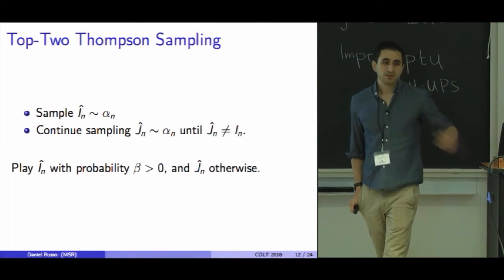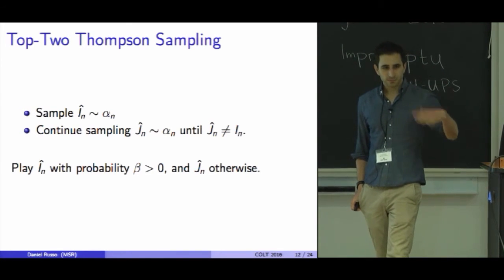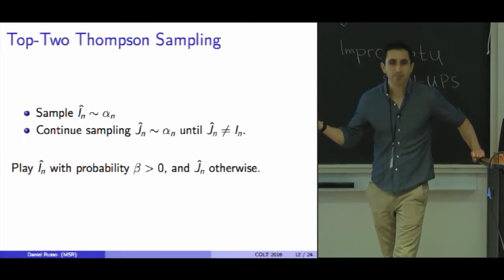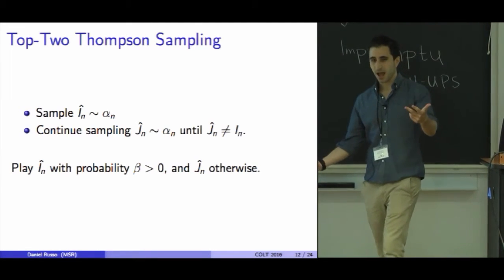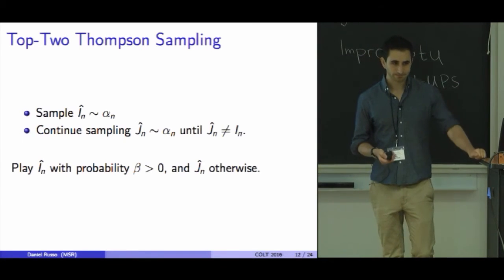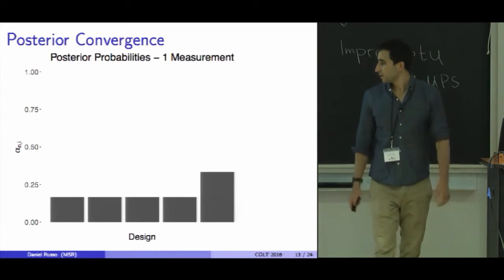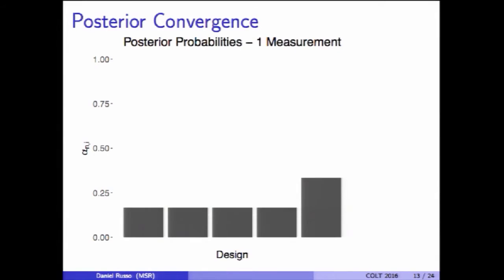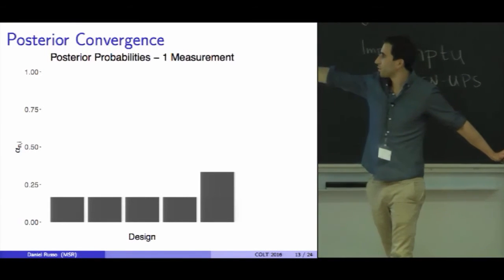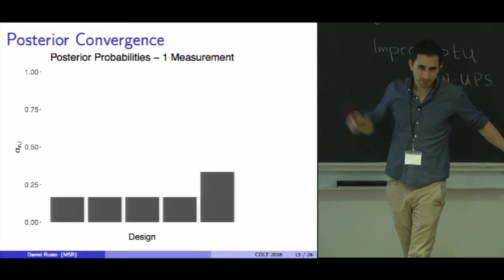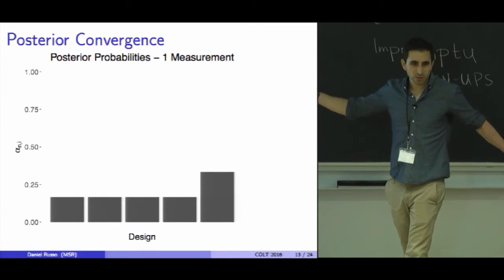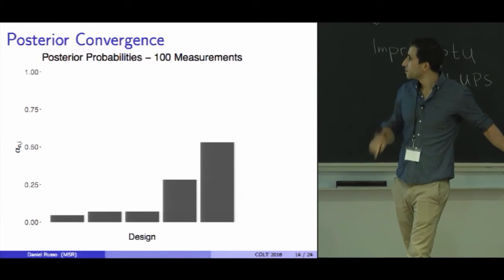Here I define it to be the first sample from Thompson sampling, and the next top guy is the first sample from Thompson sampling that differs from the top sample. So I keep running Thompson sampling until I get two distinct actions out, and then I flip a weighted coin to decide which one to play. Now I'm going to establish some kind of optimality result for these algorithms, and it's going to pertain to the rate at which this posterior distribution concentrates. Here I have a real simulation trial. I have the posterior probabilities assigned to five different designs after one measurement has been taken. In this simulation, the real best design is option five.